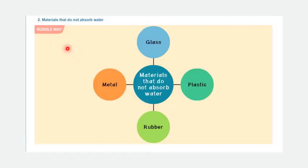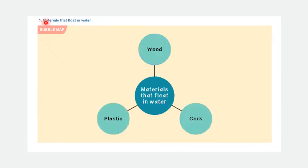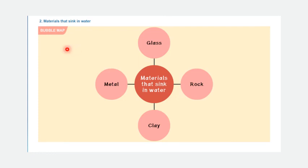Second properties of materials. Materials that do not absorb water such as glass, metal, rubber, and plastic. Materials that sink in water such as glass, rock, clay, and metal.